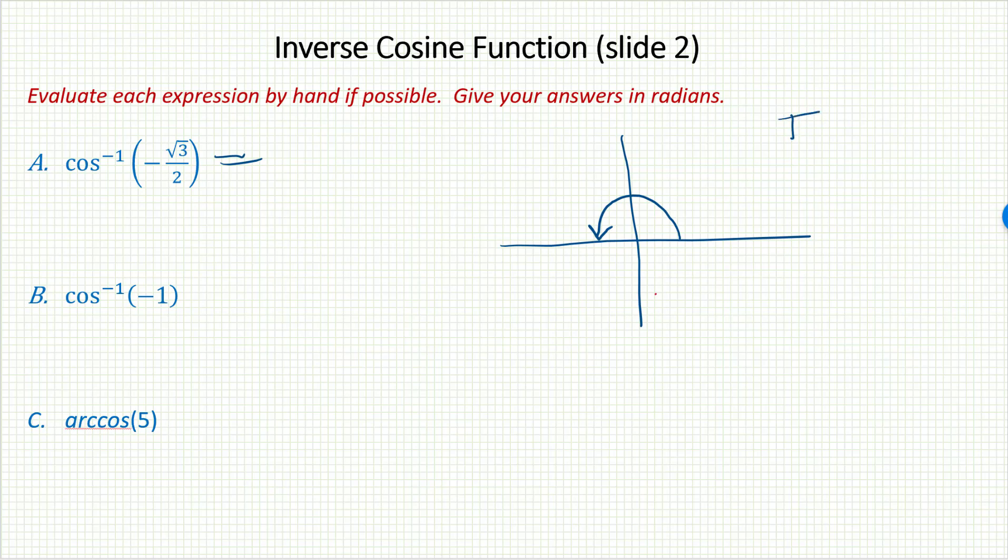That means I will always be drawing inverse cosine pictures in the first or second quadrant. Well, I've got a negative ratio here, so I can't be in the first quadrant. I must be in the second quadrant. Cosine is negative there. I'll draw myself a little reference triangle picture. Cosine is adjacent over hypotenuse. And of course, I recognize this immediately. It is a 30-60-90 triangle.